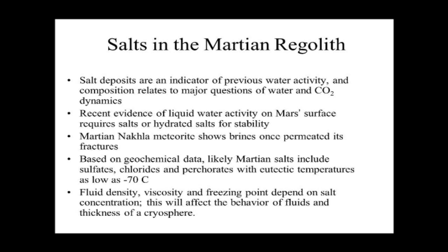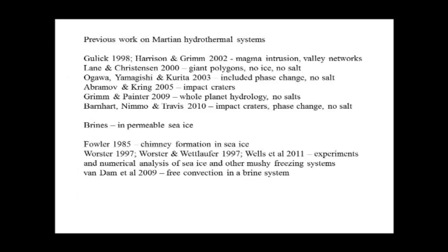Before I got into my own numerical modeling, I took a look at what other people had done. There was a fair amount of work that had been done over the years on magma intrusions and how they might generate hydrothermal systems on Mars. And the outflows could be involved in valley networks or fluvial network systems. And giant polygons. Impact craters are obviously a favorite subject, because of all the energy that they put into the surface and you would melt ice and have a hydrothermal system going at least for a while. But generally these models did not have an ice phase or they didn't have salt, which is pretty important.